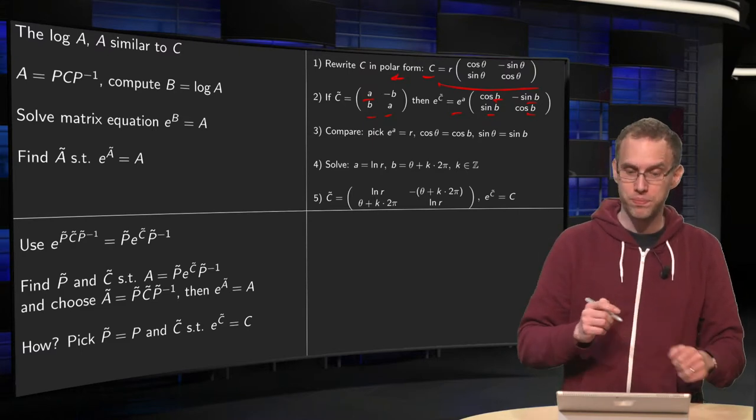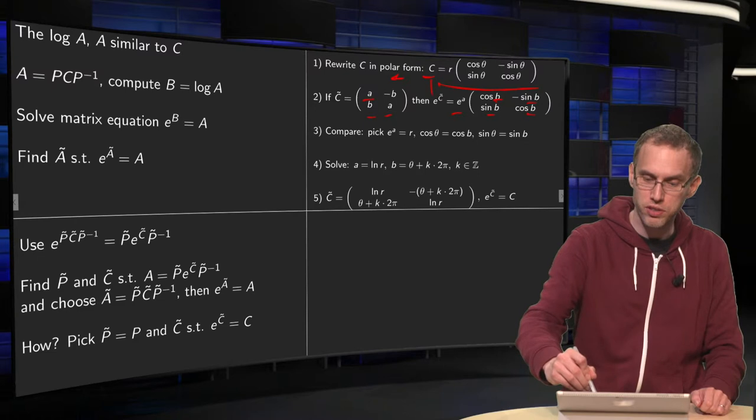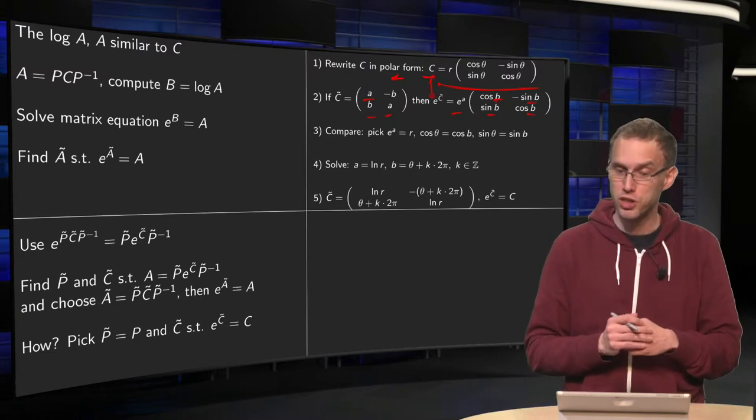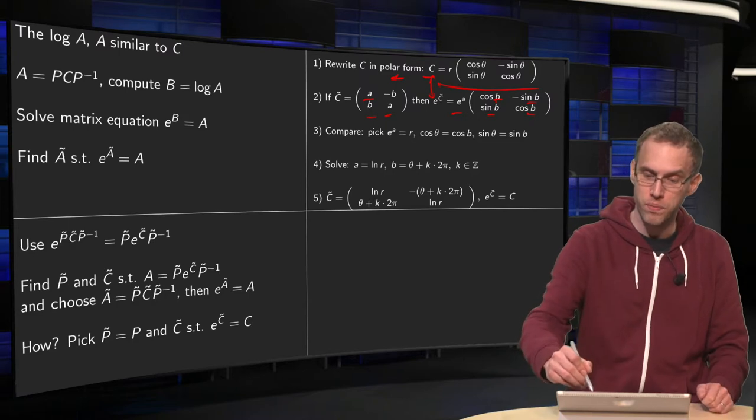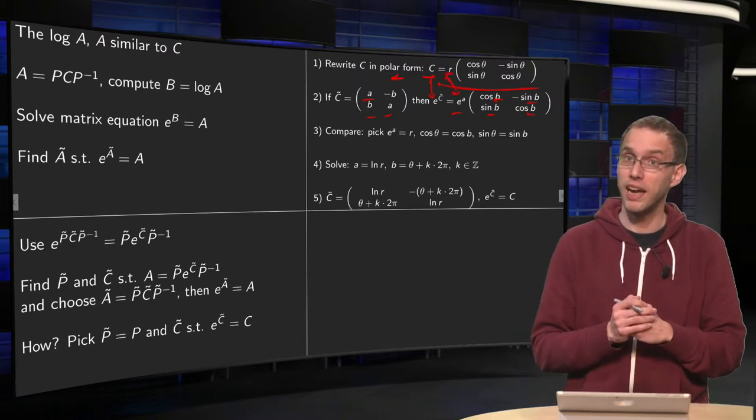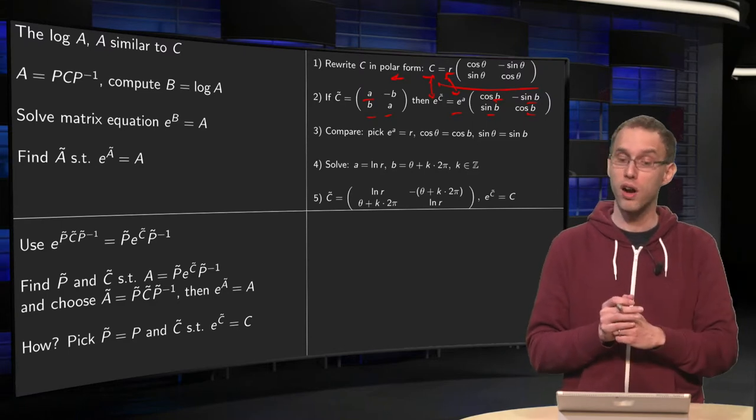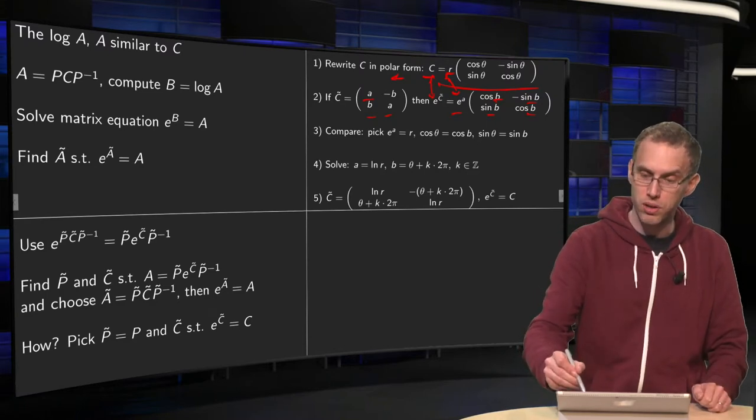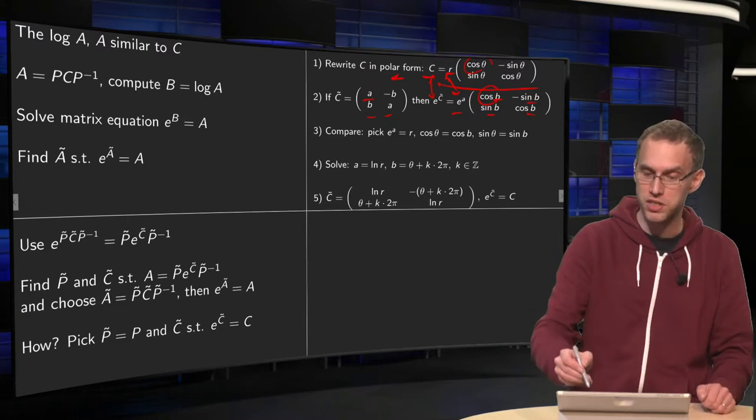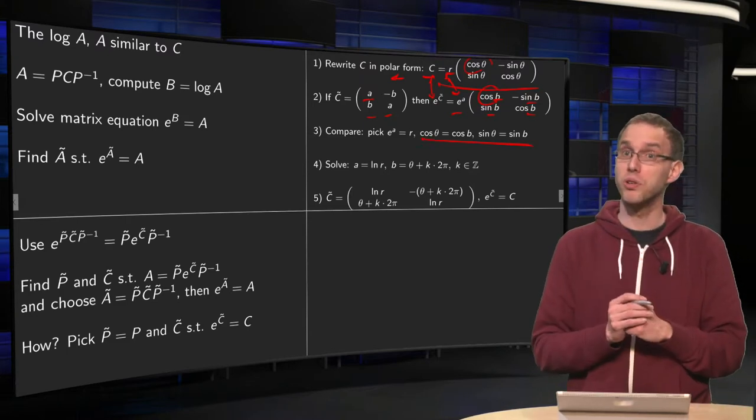And then you compare, you want your e to the power of C̃ to be equal to C, and you see the matrices have the same structure, so that works if you make these amplitudes the same, so you have to pick e to the power of A equals R, and you know your R. And you see that your cosine of theta has to be the same as the cosine of B, the sine of theta has to be the same as the sine of B. So you have those two conditions over here.